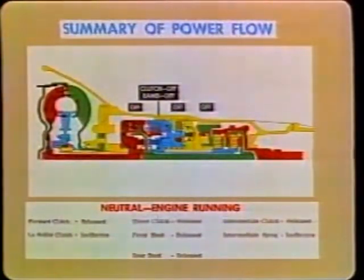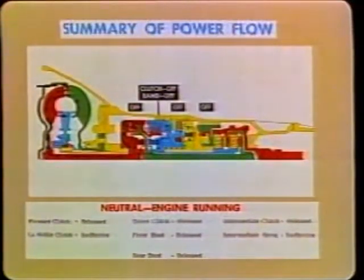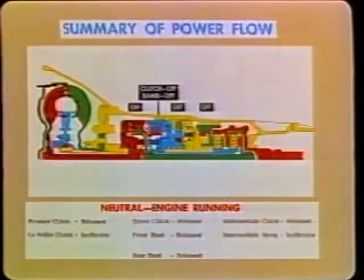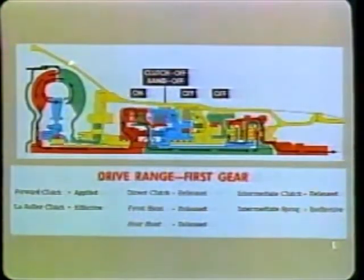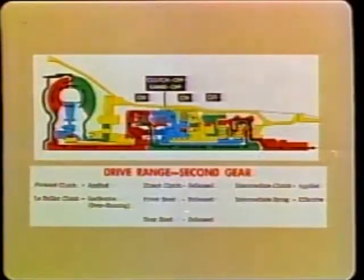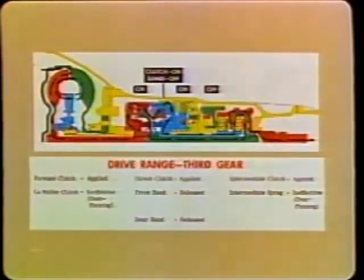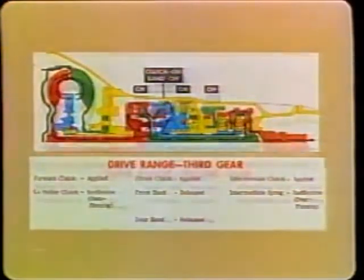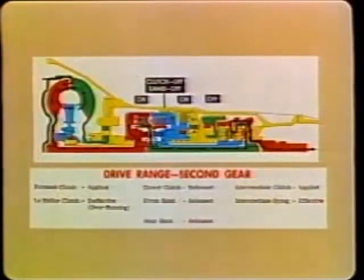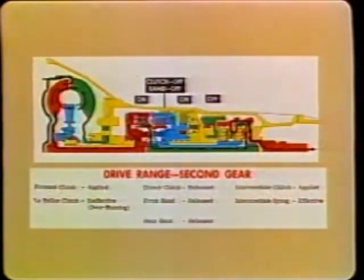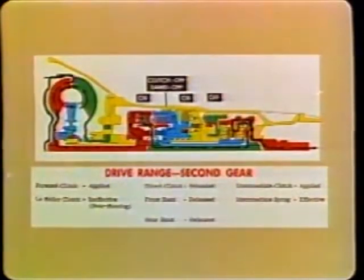This concludes part four. Let's see what you've covered so far, using the diagram showing the path of power in the following gear shift selections. Remember to stop the projector to allow yourself time to study these diagrams. This is neutral. This is drive range first gear. This is drive range second gear. This is drive range third gear. Detent downshift — to be used under 70 miles per hour — automatically changes from drive range third gear to drive range second gear. The power path in detent downshift is the same as drive range second gear.